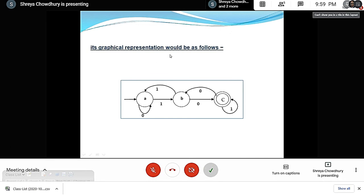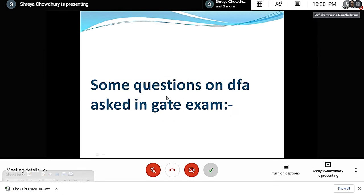The graphical representation is as follows: A to B with input 1, A loops to itself with 0, B to C with 0, B to A with 1, C to itself with 1, and C to B with 0, where C is the final state.